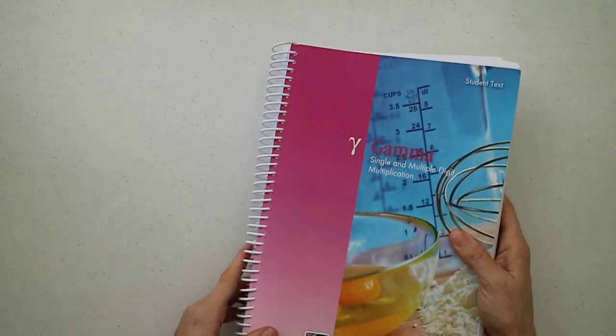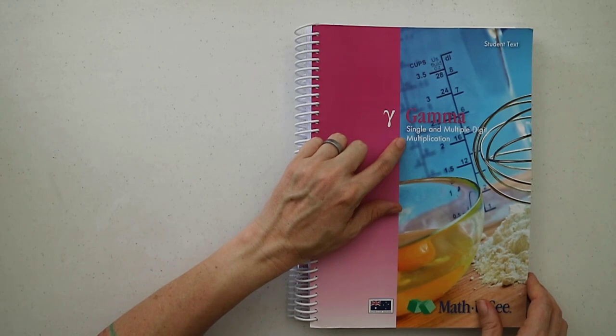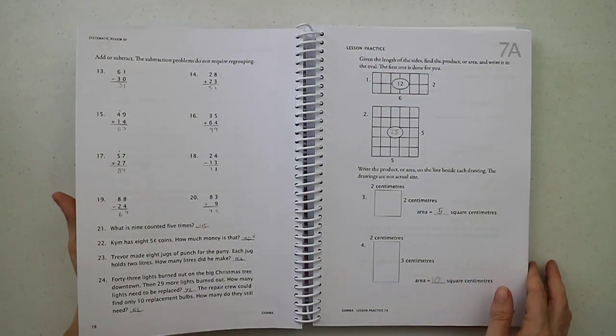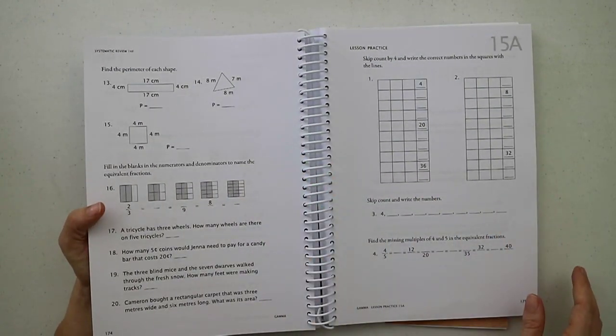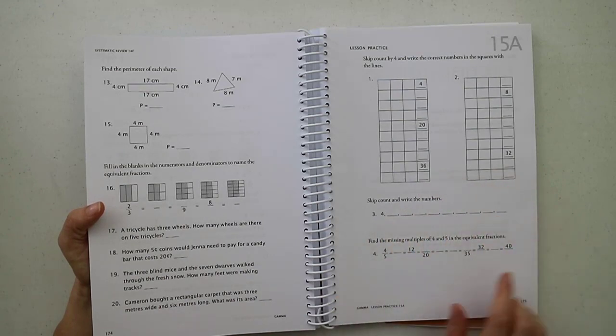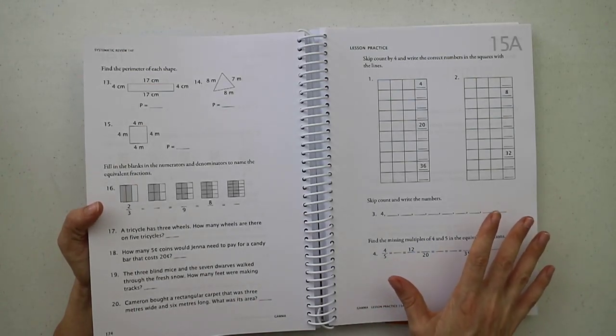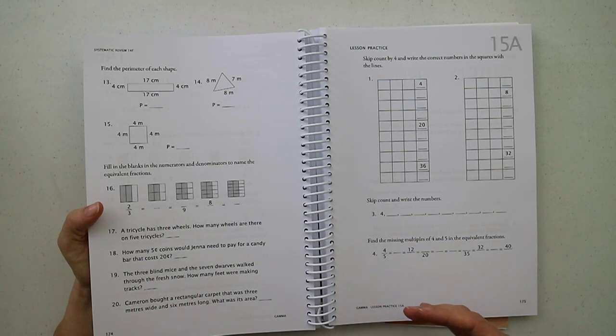Next up we also have Gamma, sorry to the Greek relatives if I just butchered that pronunciation. There again it's pretty similar. Gamma is single and multiple digit multiplication, it is the third level. The teacher booklet is the same so I won't go through that. Again for this you've got lesson practice for A, B, and C. In this one it's skip counting by four, skip counting, writing the numbers, do the multiples of four and five to show equivalent fractions which is really good. That's another thing I like about this is that it will introduce concepts like equivalent fractions when it makes sense. By, you know, they're not getting surprised with it years later down the track, they're already familiar with the concept.